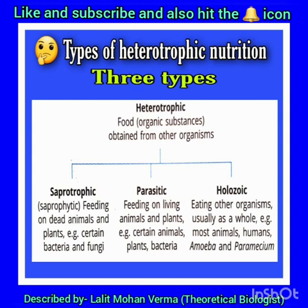What are the types of heterotrophic nutrition? The first one is saprophytic, meaning feeding on dead and decayed animals and plants. For example, certain bacteria and fungi. Second, parasitic — feeding on living animals and plants. For example, certain animals, plants, and bacteria. And the third one is holozoic. Holo means complete — eating other organisms usually as a whole. For example, most animals, humans, amoeba, and paramecium.